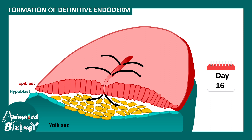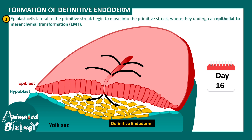Formation of the definitive endoderm is the next process. At around day 16, many of the epiblast cells move inside by the process of ingression and populate the inside of the embryo. Eventually, they replace the cells in the hypoblast layer and form the definitive endoderm. First, the cells need to detach from the epiblast layer, and this happens via a process known as epithelial-to-mesenchymal transition (EMT). The first ingressing epiblast cells invade the hypoblast and displace its cells to create the definitive endoderm.